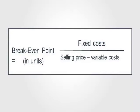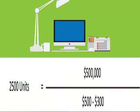As an example, we have $500,000 in fixed costs divided by $500, which represents the total sales revenue, minus $300, which is the cost to make the product. All of that equals 2,500 units, which is the break-even point.